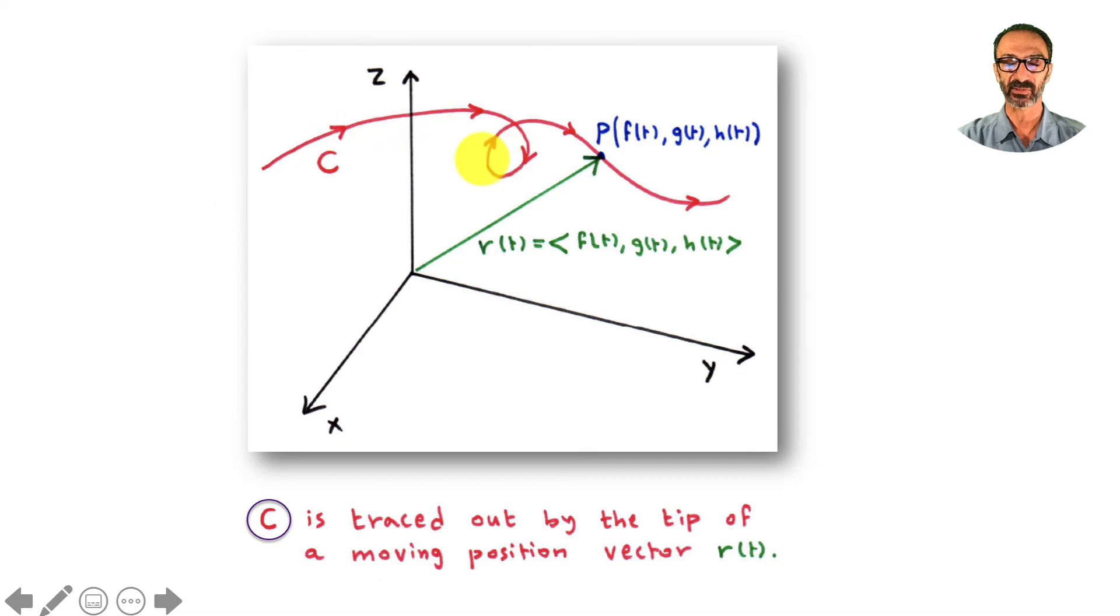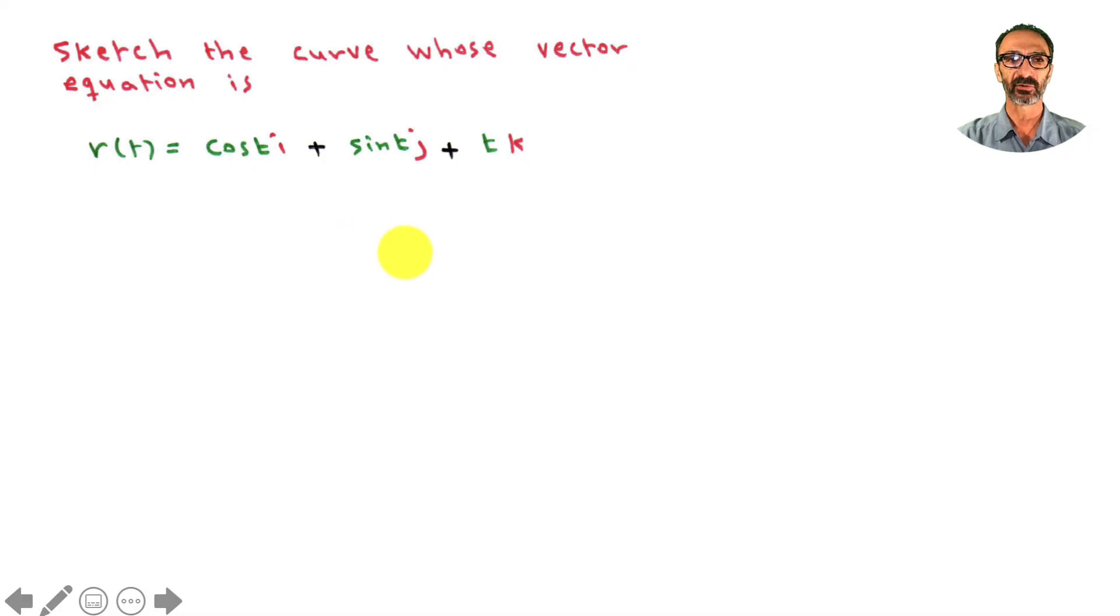C is traced out by the tip of a moving position vector r(t). Sketch the curve whose vector equation is r(t) = cos(t)i + sin(t)j + tk. Notice that x = cos(t), y = sin(t), and z = t. What's interesting here is this is in space, three dimensions. If you ignore this for just a little bit, imagine we don't have k.